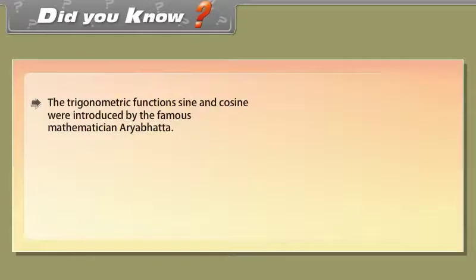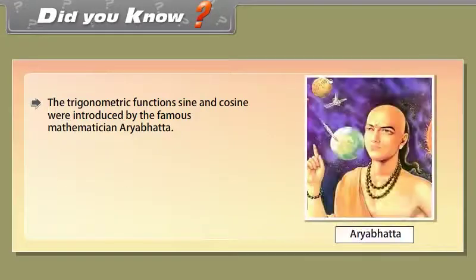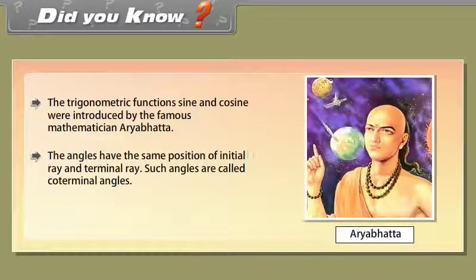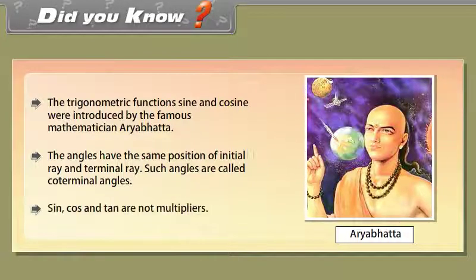Did you know? The trigonometric functions sine and cosine were introduced by the famous mathematician Aryabhata. Angles that have the same initial ray and terminal ray are called coterminal angles. Note that sin, cos, and tan are not multipliers.